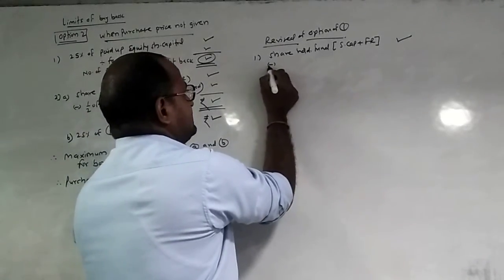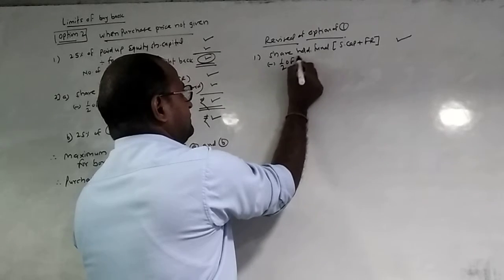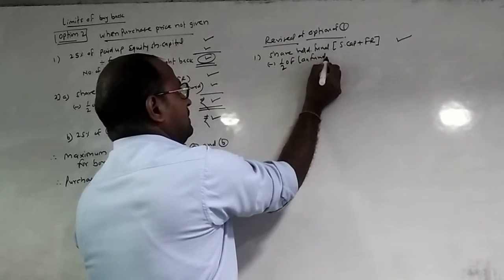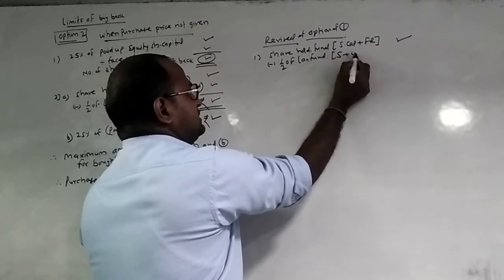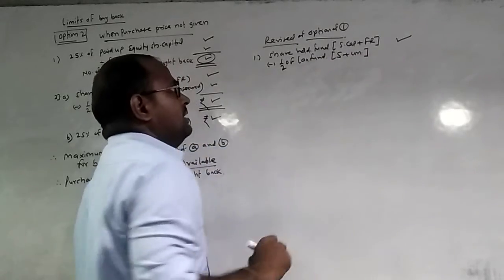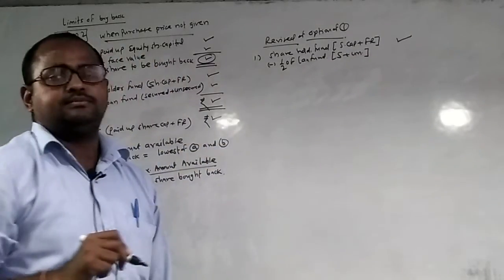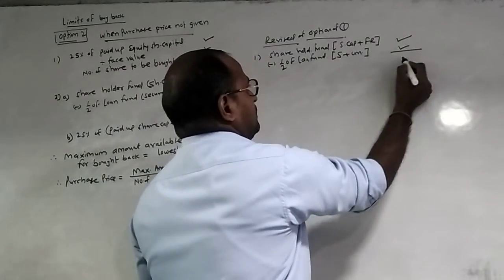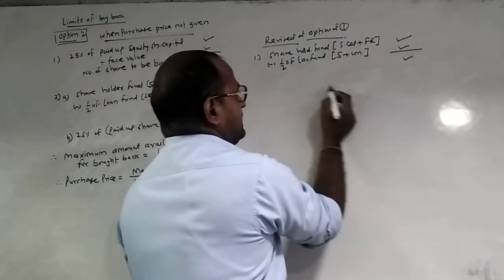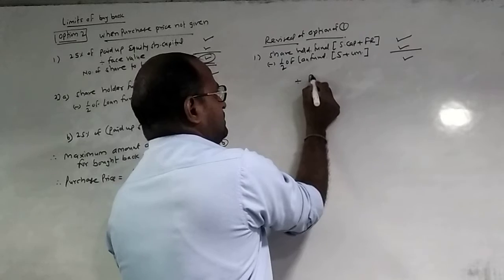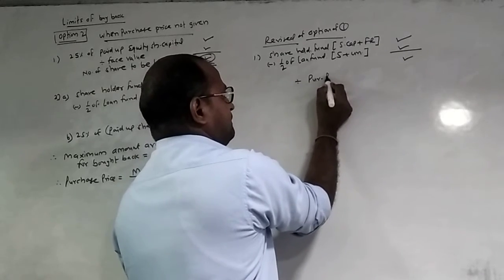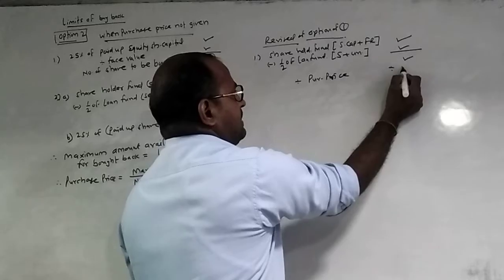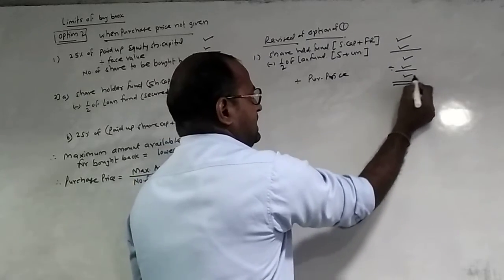And then, less half of the loan fund — secured or unsecured. Less half of the loan fund, secured or unsecured. So the list is the balance, and that list is divided by the purchase price to give the number of shares.